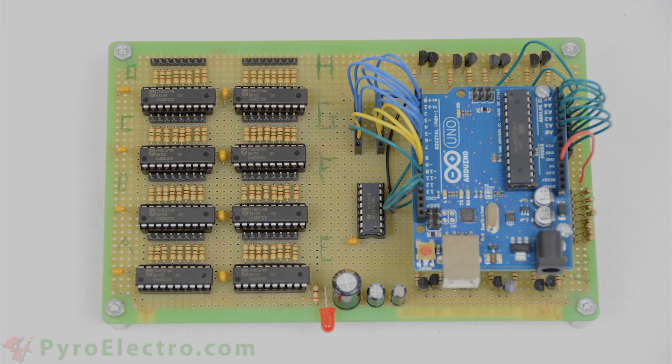The controller board is split into two sections. On the left are 8 LED driver ICs and on the right is the Arduino and cathode control.